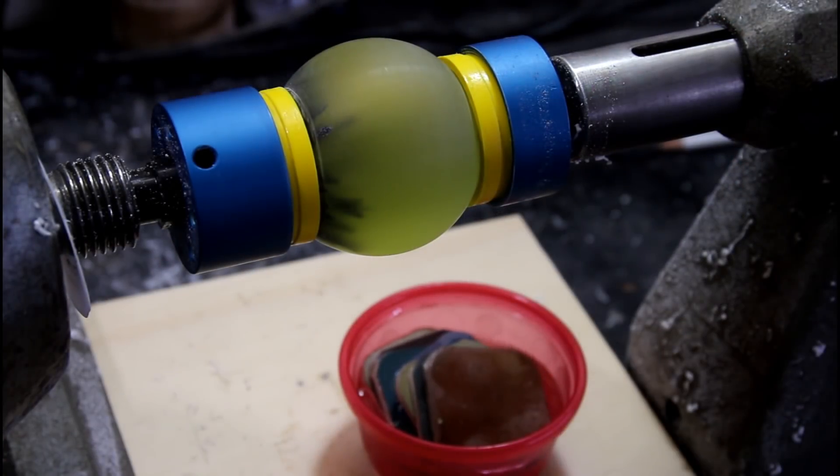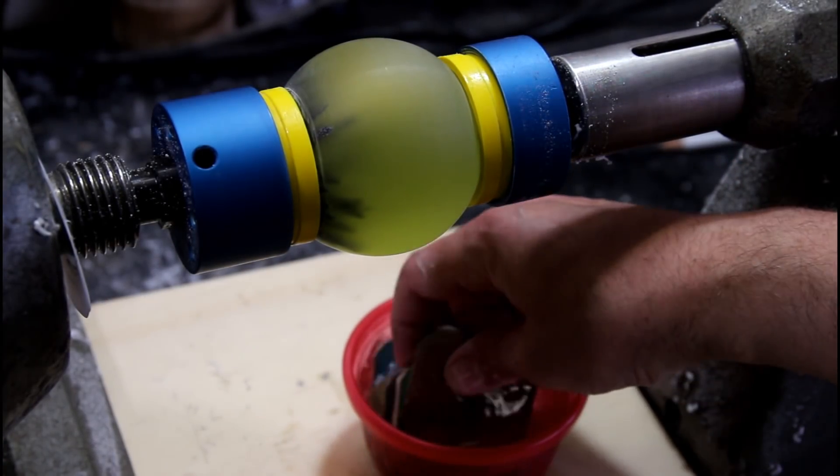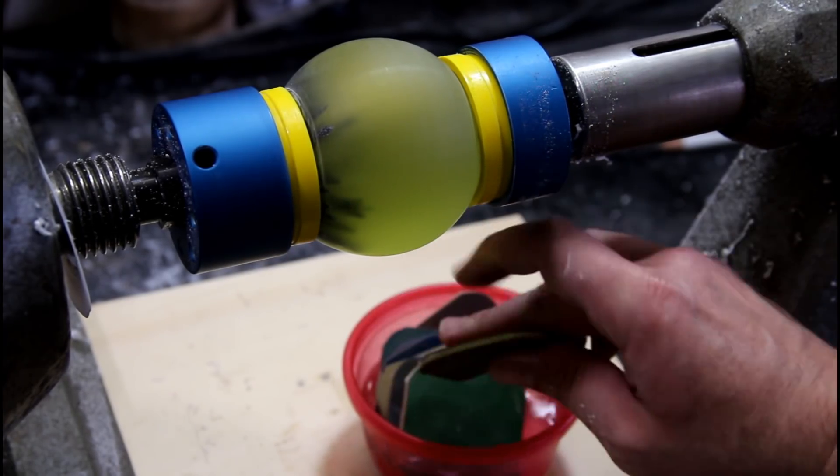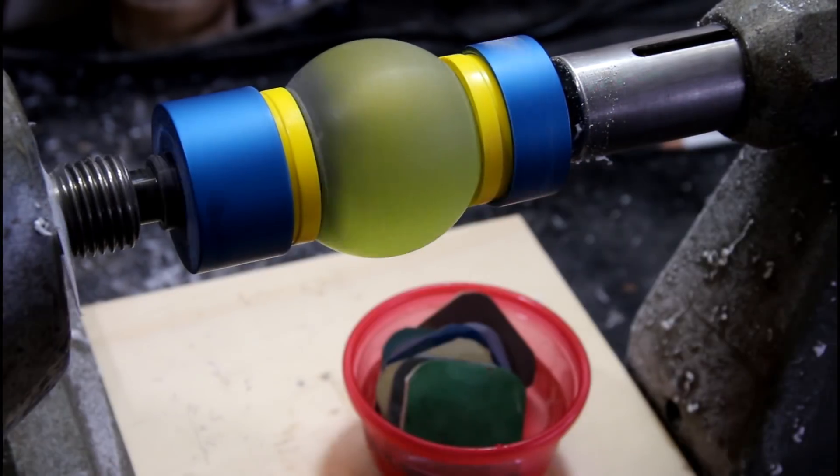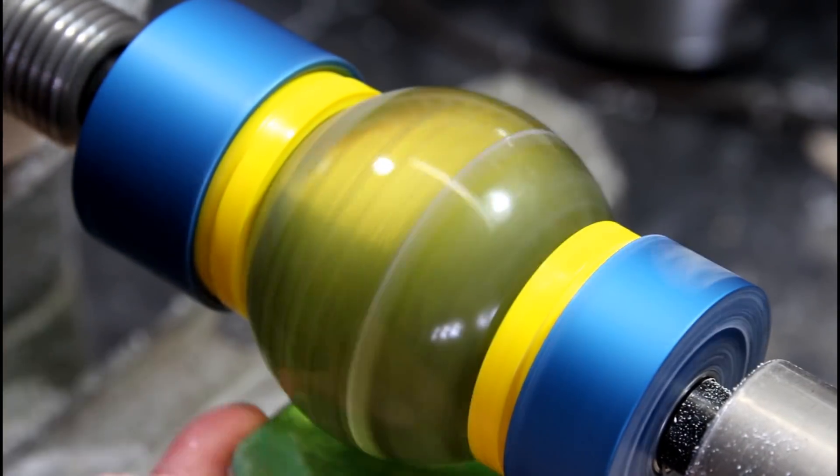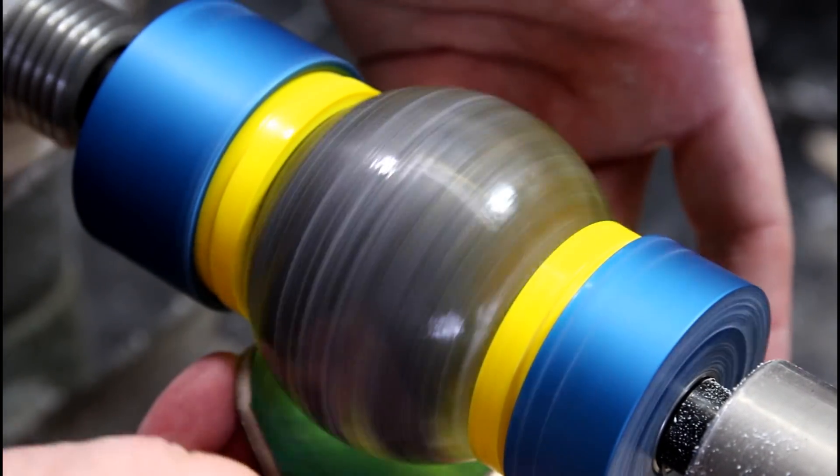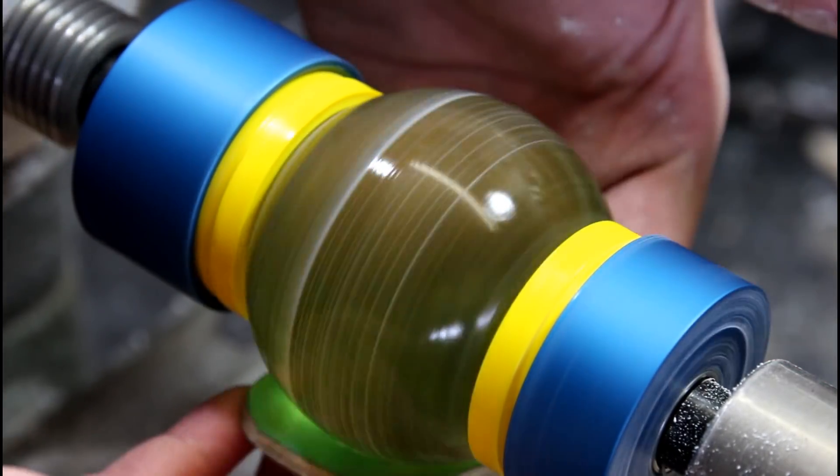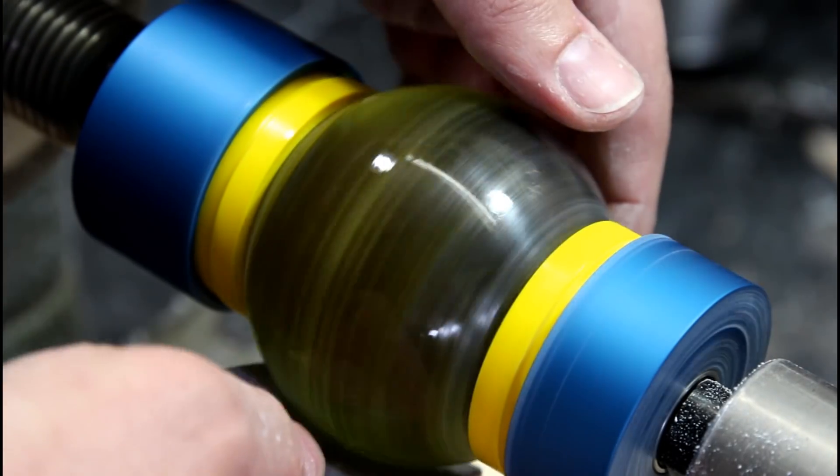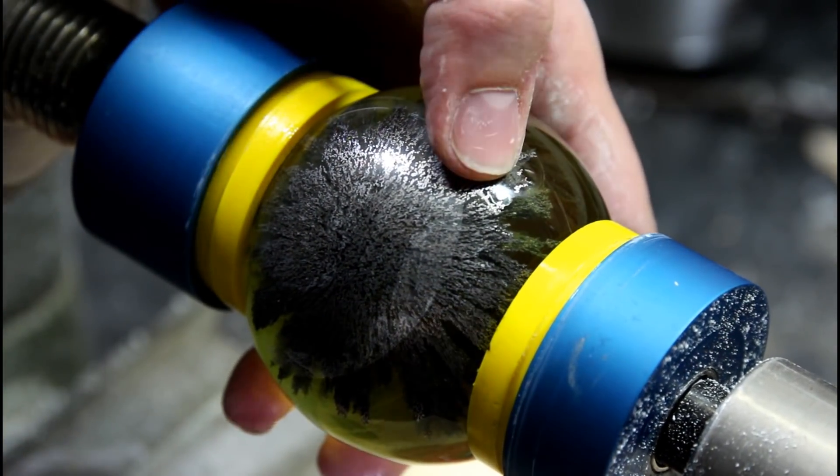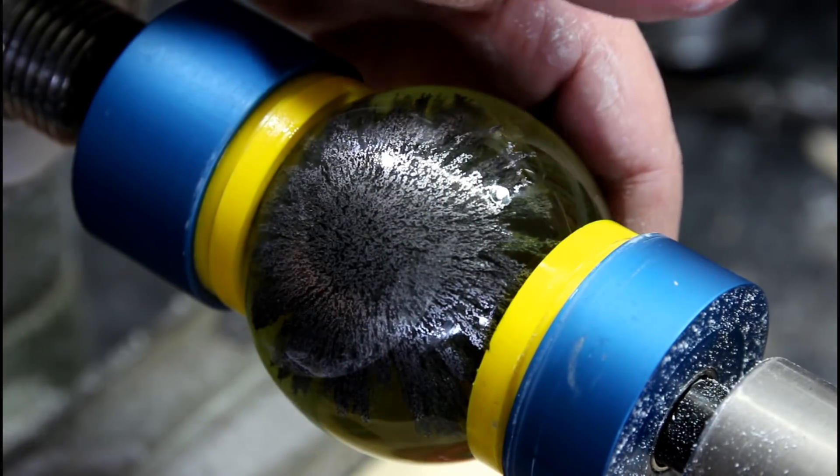And we'll move on to the micro mesh. Micro mesh are my favorite polishing pads. They start at 1500 and go through to 12,000. This is kind of fun. I don't think I've ever polished iron shavings before. No, I know that I haven't. I don't have to pretend I've never polished iron shavings before.